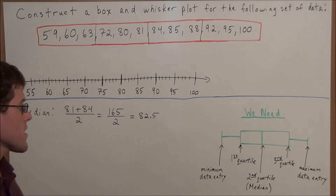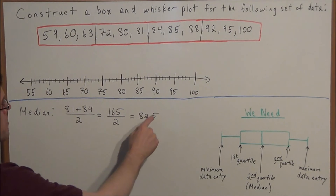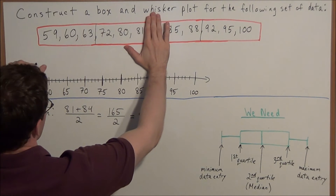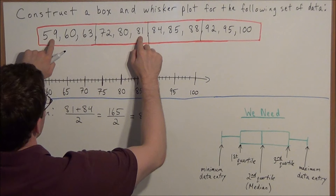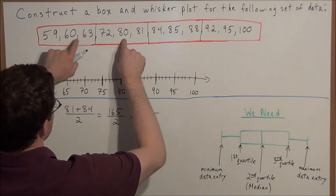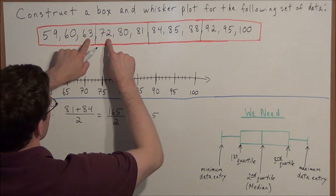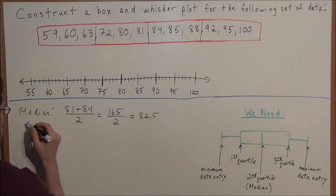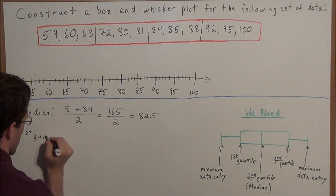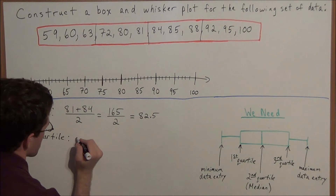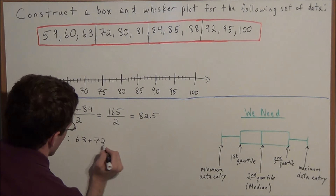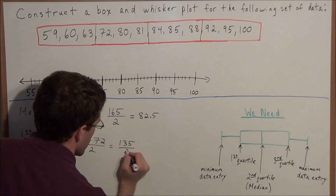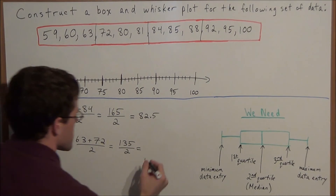To find the first quartile, we look at all the data to the left of the median, which starts at 59 and ends at 81, and find the median of that set. We mark off 59 and 81 and march towards the middle — there's no middle number, so we find the average of 63 and 72: 63 plus 72 divided by 2 equals 135 divided by 2, which is 67.5. So our first quartile is 67.5.